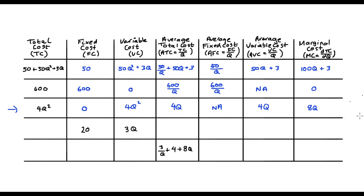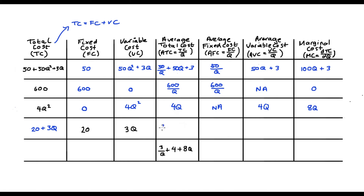In our fourth example, we don't have our total cost function — we have our fixed cost and our variable cost function. What we need to rely on is the understanding that total cost can be thought of as the sum of fixed and variable costs added together. So if fixed cost is 20 and variable cost is 3Q, then our total cost will be 20 + 3Q. The other functions follow from this: average total cost is (20 + 3Q)/Q, which is 20/Q + 3. Average fixed cost is 20/Q, and average variable cost is 3Q/Q, which is 3. Lastly, marginal cost is equal to 3, which is the derivative of our total cost function.